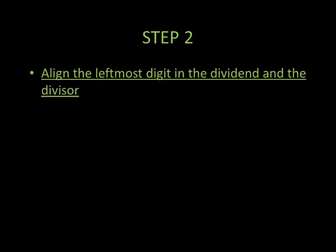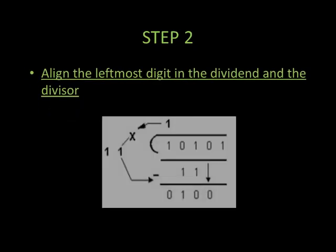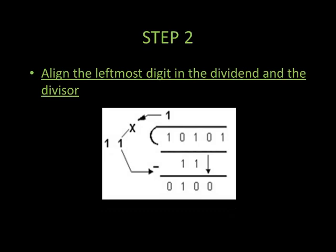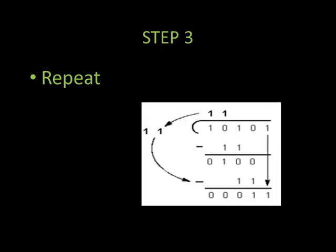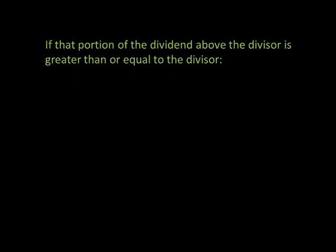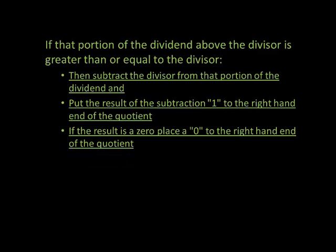For step two, we will align the leftmost digit in the dividend and the divisor, as illustrated. For step three, we repeat: if that portion of the dividend above the divisor is greater than or equal to the divisor, then subtract the divisor from that portion of the dividend and put the result of the subtraction — a one — to the right-hand end of the quotient. If the result is zero, place a zero to the right-hand end of the quotient.